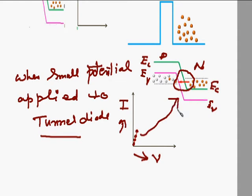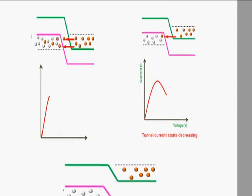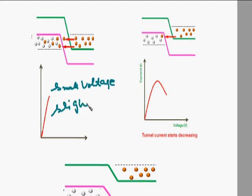This small current is because of the partial overlapping of electrons and holes through the depletion region. If further forward bias is applied, there is complete overlapping — the electrons and holes are completely face-to-face across the very thin depletion region. The tunneling current becomes maximum because there is maximum overlapping and maximum probability for the electron to tunnel through and reach the P-side. That current is called the peak current.